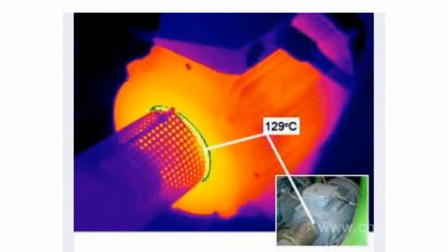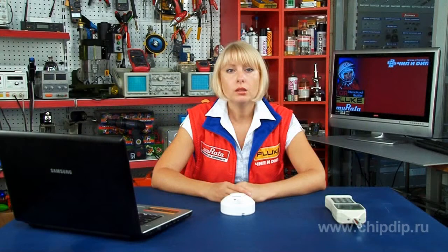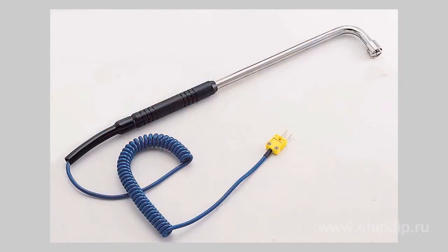Infrared cameras can be referred to as a specific type of infrared sensor. They allow obtaining a picture of the surface temperature distribution of the object under measurement.